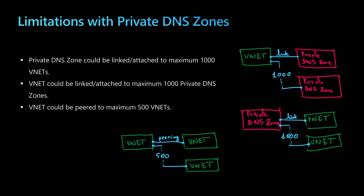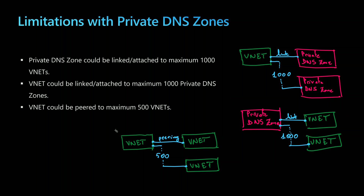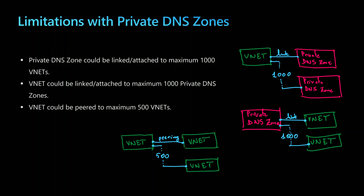Keep in mind three important limitations when working with Azure private DNS zones. First, a private DNS zone can be linked to a maximum of 1000 virtual networks. Second, a virtual network like the hub can be peered with at most 500 virtual networks as spokes. Follow me next for a demonstration.